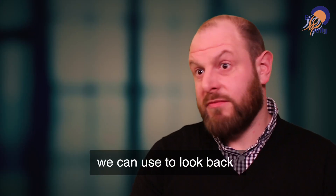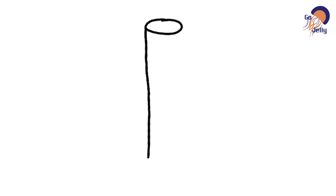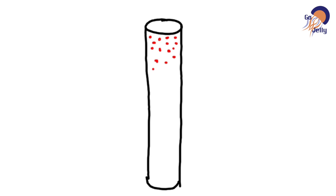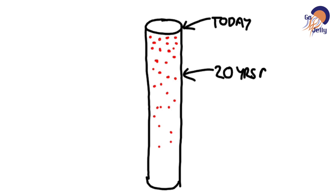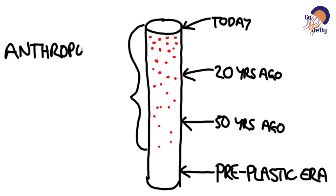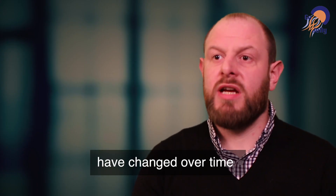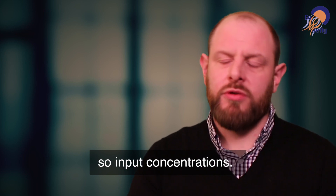One thing we can use to look back in history and get a timeline on plastic accumulation in sediments is to take sediment cores. Because plastic takes such a long time to degrade in the environment, we're pretty certain that most of the plastic that entered the environment decades ago is still present there, so it would be recorded in the cores. From that, we can also see how concentrations and inputs might have changed over time.